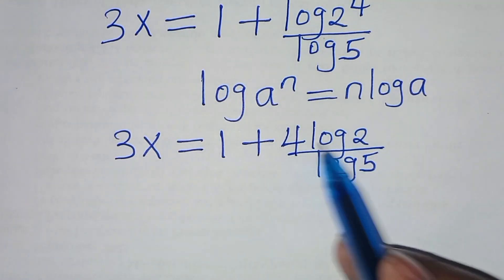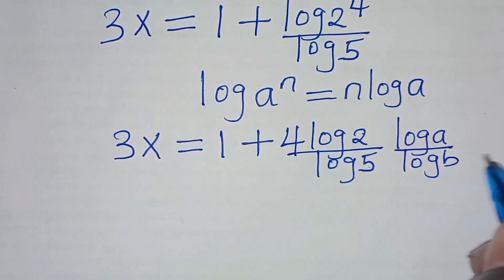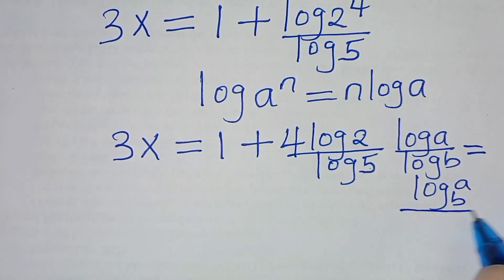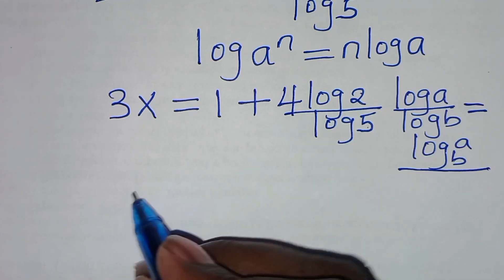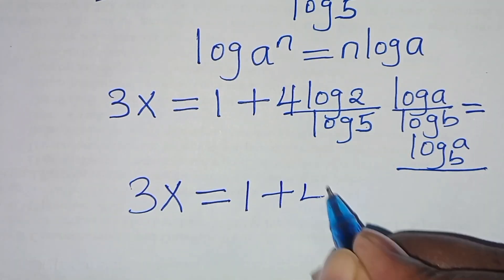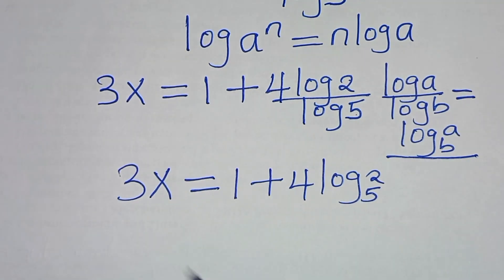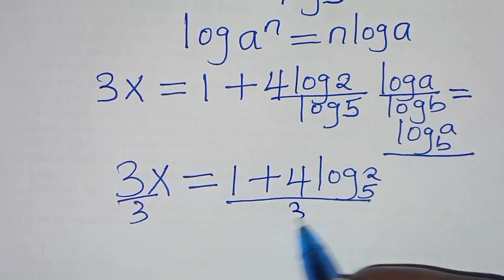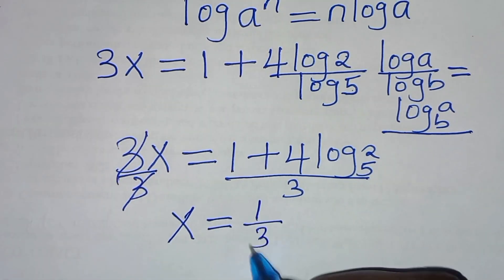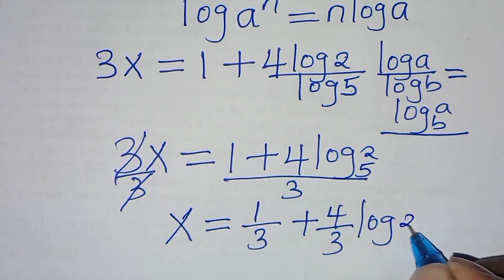The next step is that log 2 divided by log 5 is in the form of log A divided by log B, which we can express as log A to base B. Applying this logarithm property, we have 3x equal to 1 plus 4 log 2 to base 5. So x is equal to 1 over 3 plus 4 over 3 times log 2 to base 5.